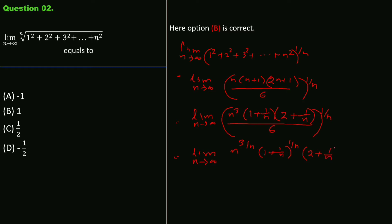Taking n→∞: n^(3/n) → 1, the quantity (1 + 1/n) → 1 since 1/∞ = 0, (2 + 1/n) → 1, and 6^(1/n) → 1. So the final result is 1·1·1·1 / 1 = 1. Therefore option B is correct.